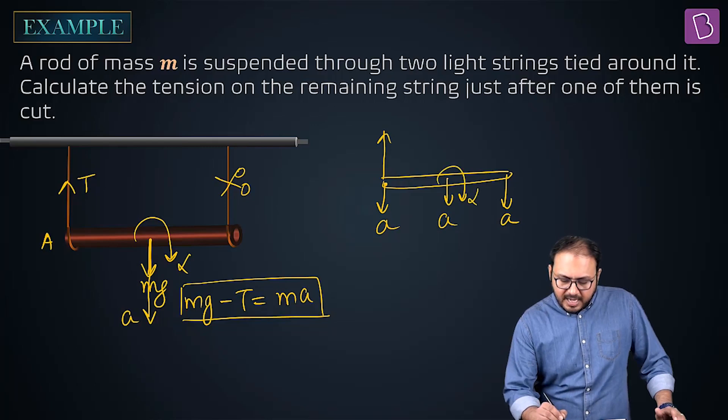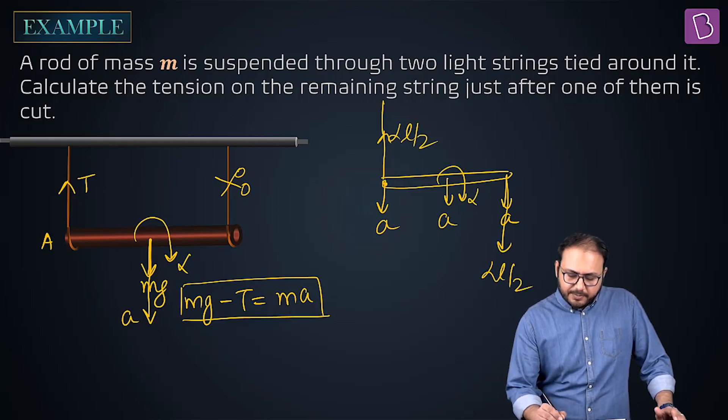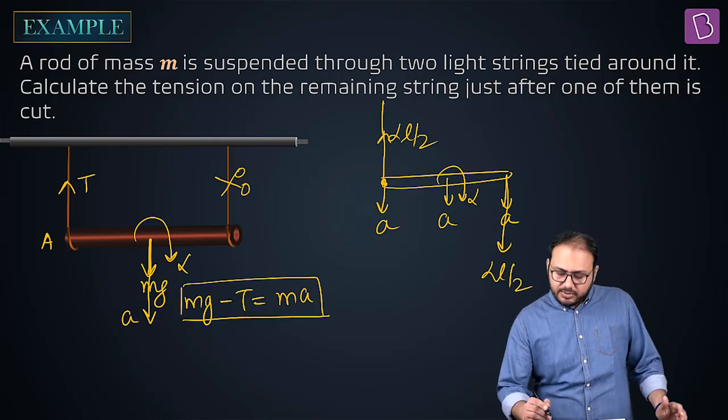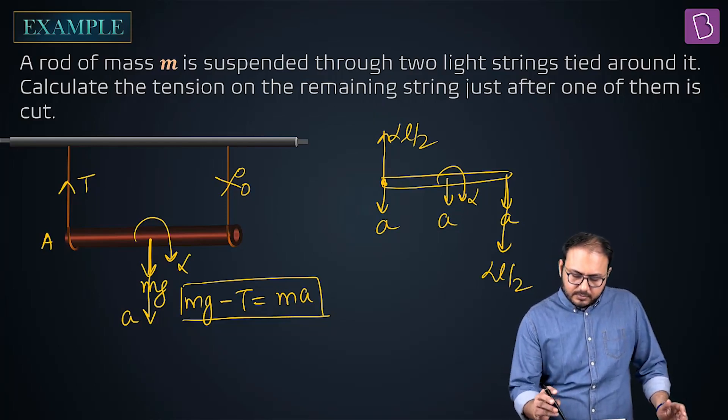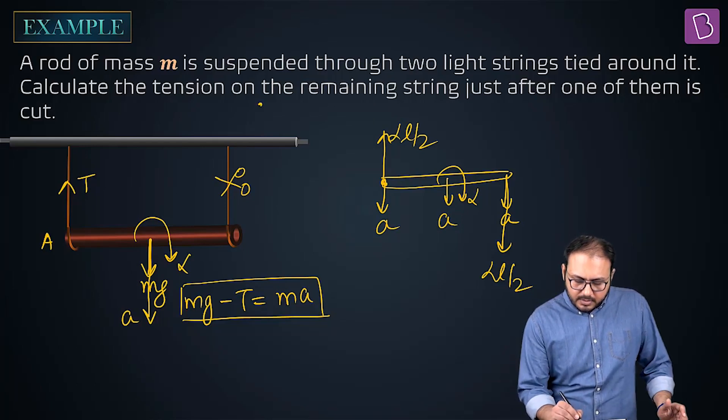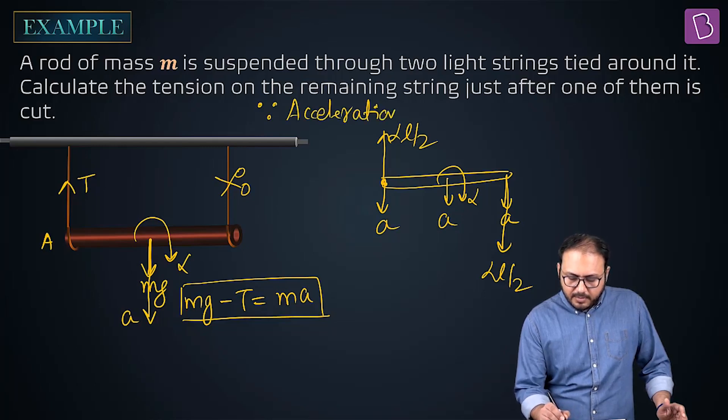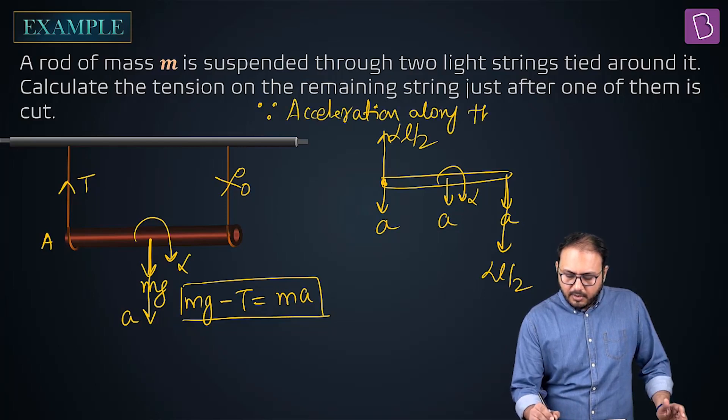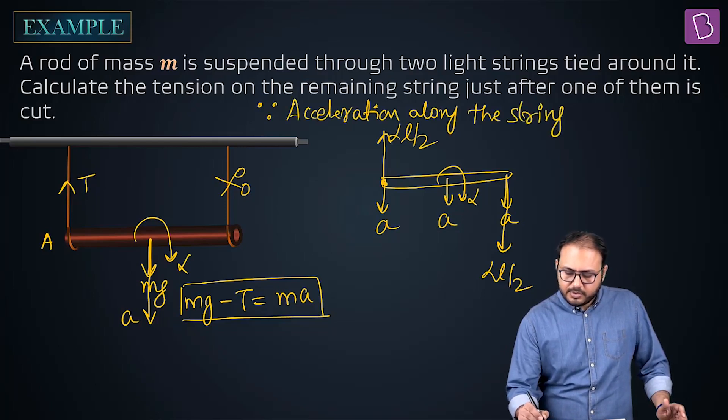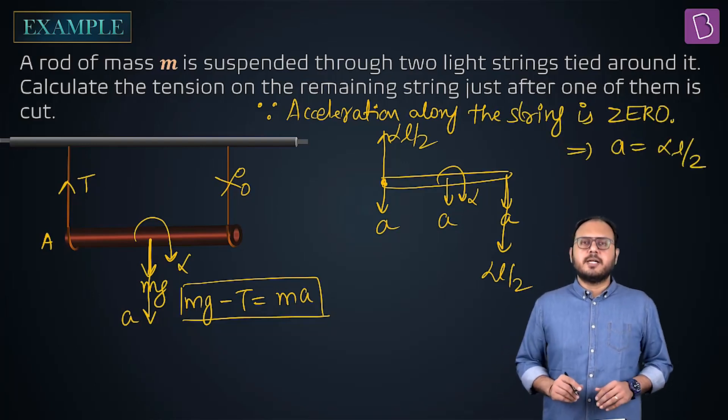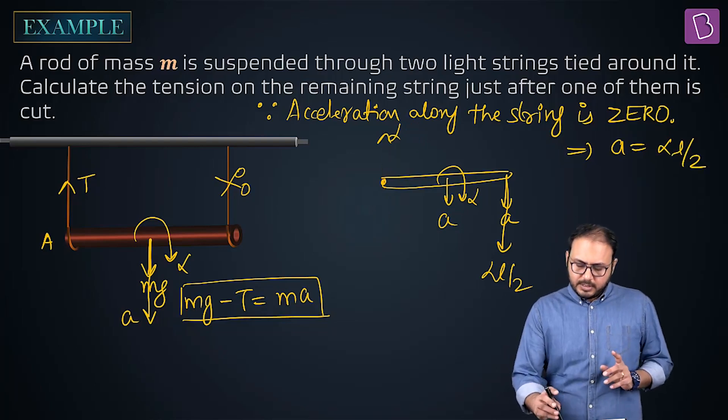Because of alpha, this guy has alpha L by 2 and this guy has L by 2 down good. But this guy is attached to the string. What is the acceleration along the string? Zero. Why? Because string is tied up. So acceleration along the string is 0. Since acceleration along the string is zero, that implies A is equal to alpha L by 2.